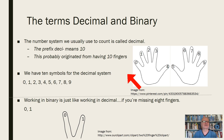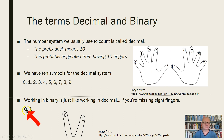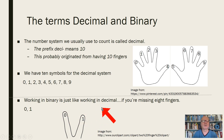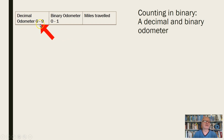Binary is just like decimal, if you're missing 8 fingers. You only have 2 digits: a 0 and a 1. So I would need 2 fingers to represent that — a 0 finger and a 1 finger. That's how binary works.